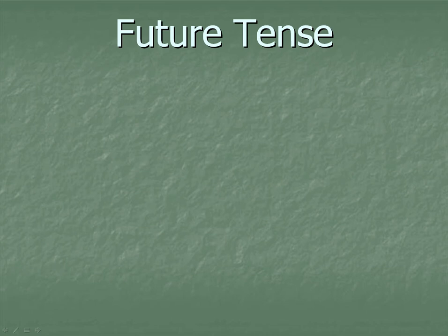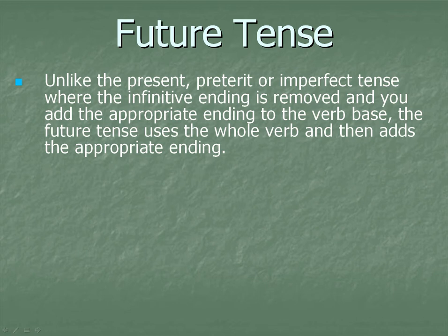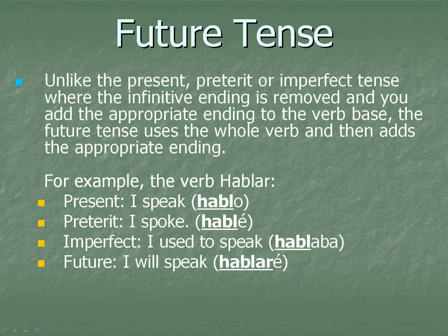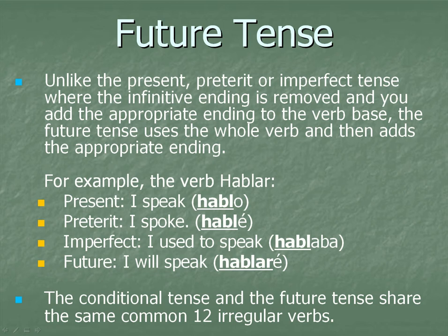Unlike the present, preterite, or imperfect tenses where the infinitive ending is removed and you add the appropriate ending to the verb base, the future tense uses the whole verb and then adds the appropriate ending. Here's an example: Present — I speak, hablo. I spoke — Preterite — hablé. Imperfect — I used to speak, hablaba. Future — I will speak, hablaré. You can see right there the whole verb in its infinitive form is used. The conditional tense and the future tense luckily share the same 12 common irregular verbs.